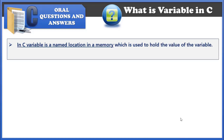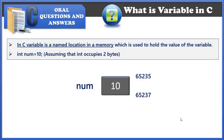Let's see this with some examples. If I declare one variable num of type integer and assign value 10 to it — assuming that an integer occupies two bytes of memory — then two bytes of memory have been allocated to num, from address 65235 to 65237.